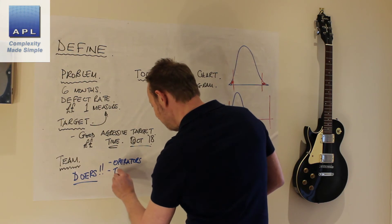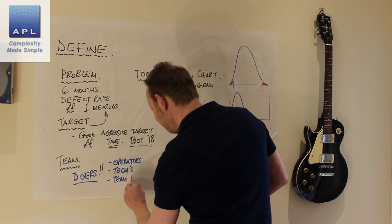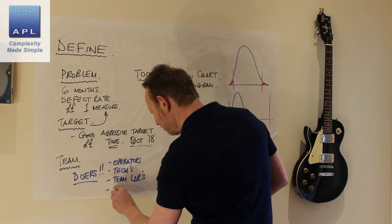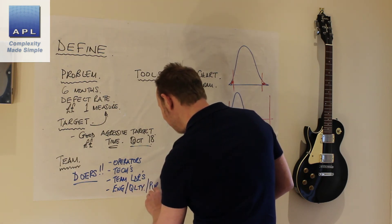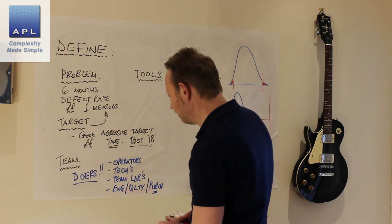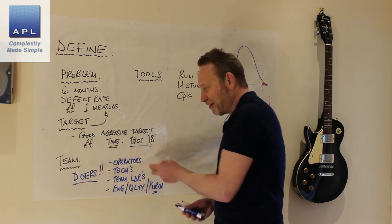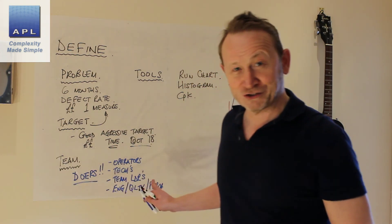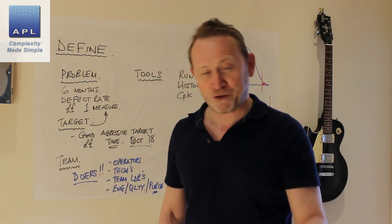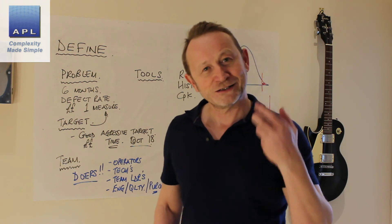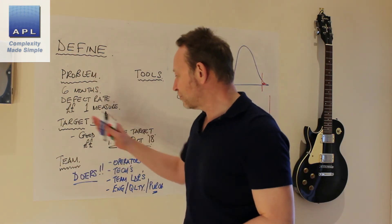So that means operators, it means technicians, it means team leaders. Yes, if you need technical staff like an engineer, someone from quality, someone from purchasing, all fine and dandy folks. But the doers, the operator and the technicians, you can solve any problem with those guys. I could push the engineers away and I could still solve a technical problem just with operators alone. Think of the power to that. So we want you to define the problem, the target, the team.